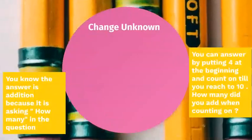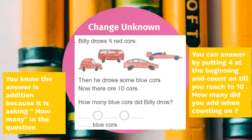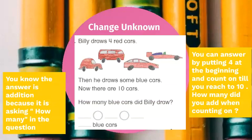Let's take a look at the other example. Billy draws four red cars, then he draws some blue cars — they didn't say how many, they said 'some' — so he draws more. Now there are 10 cars. Well, first you know the answer is addition, because it is asking 'how many' — not 'how many more,' not 'how many fewer.' 'How many' is used in addition.